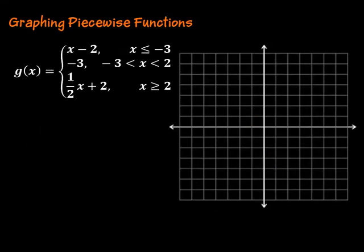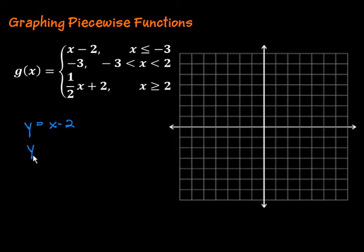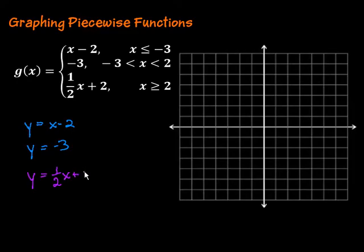Now let's take a look at another one. For this one, we actually have three pieces to our function. The first one, let's go ahead and break it up: y equals x minus 2. Then we have y equals negative 3. And finally, y equals one-half x plus 2. So in this one we have three pieces. We notice the inequalities here, which represent the sections we're going to be using each expression for.